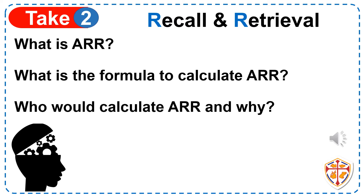It's calculated by taking the average annual profit divided by the cost of initial investment and times it by 100. The higher the percentage, the better the return on your investment. Average rate of return is calculated before making investment decisions and is usually completed by either business owners or shareholders.